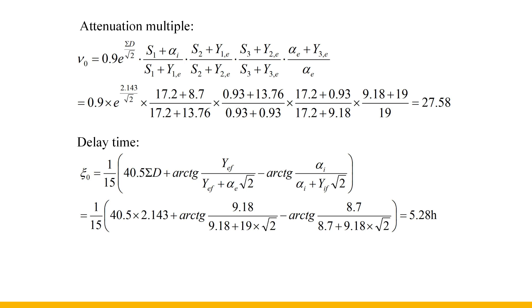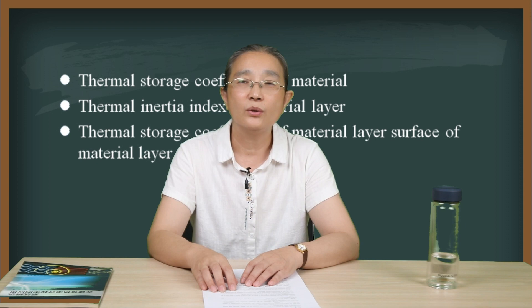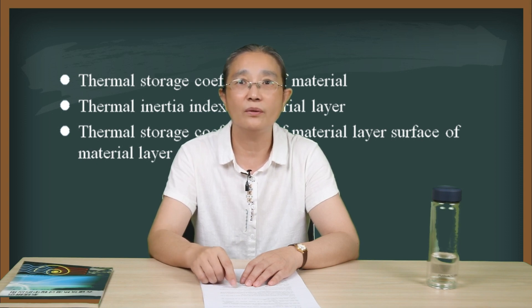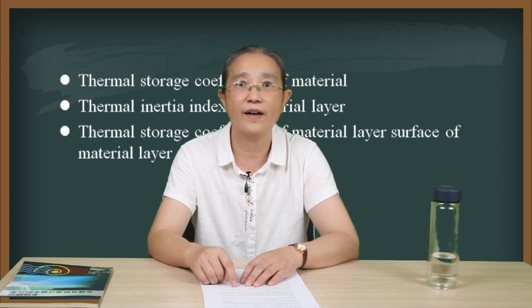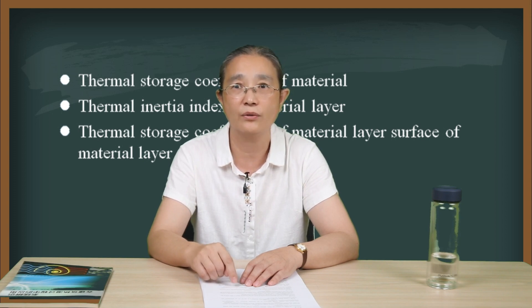Finally, substituting all calculation results into the attenuation multiple and delay time formulas: the attenuation multiple is 27.58 times and the delay time is 5.28 hours. You can follow this example to calculate the attenuation multiple and delay time of the indoor temperature wave transmitted to the inner surface of the wall, and also use this method to design a passive house and simplify such calculations.